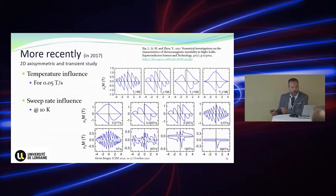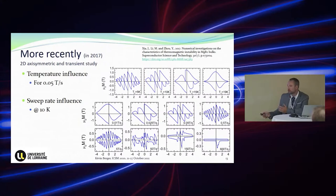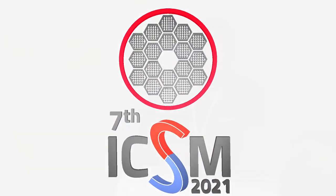They studied more deeply all the parameters that influence flux jumps. As I said before, temperature reduces the specific heat; for a fixed sweep ramp rate of 0.05 T/s, you can see the influence of temperature from 5 K to 20 K — at 20 K there are no flux jumps. With this study, at a fixed temperature of 10 K, they also studied the influence of the sweep rate — which was not possible with the previous Mexican group model. You can see some very unusual magnetization loops due to flux jumps, which are purely from modeling.